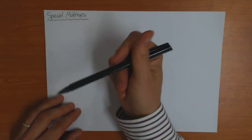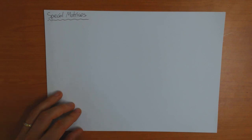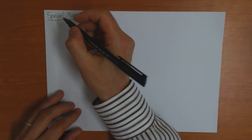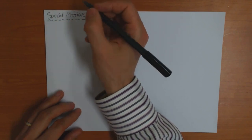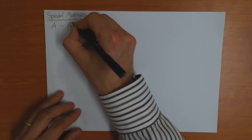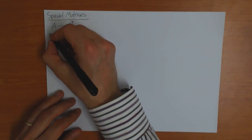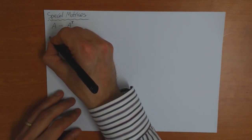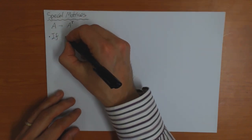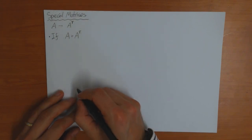These are matrices which have some kind of symmetry property. The first three I'm going to define are based upon the idea of transpose, which we defined in the previous video. Remember that if you've got a matrix A, you can define the matrix A transpose, where you take the rows and replace them by columns. The first property is that the transpose doesn't change the matrix, so A is equal to A transpose.